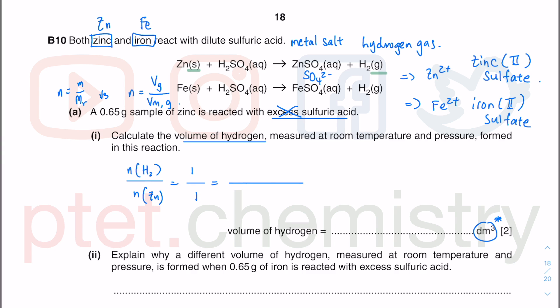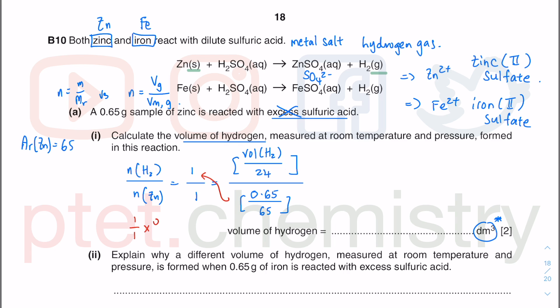The volume of hydrogen gas divided by the molar volume of hydrogen gas (in dm³, as stated in the periodic table) equals the moles of zinc, which is mass/AR = 0.65 g of zinc. The relative atomic mass of zinc from the periodic table is 65. So at the bottom is 0.65/65. The equation is: 1/1 × 0.65/65 = volume of H₂/24.